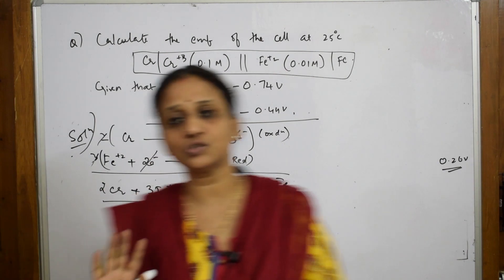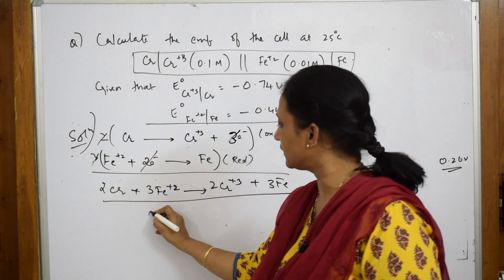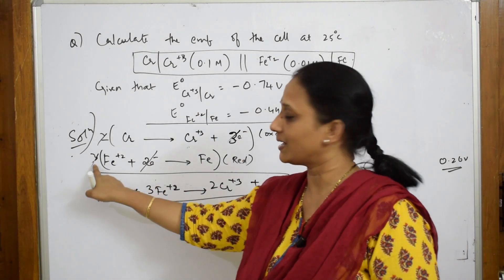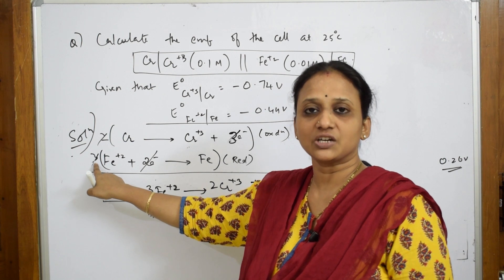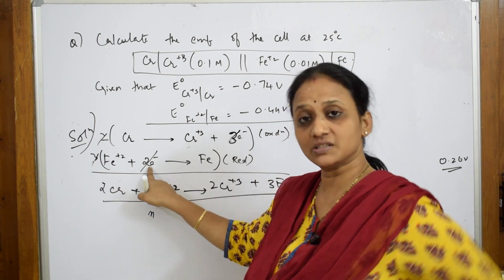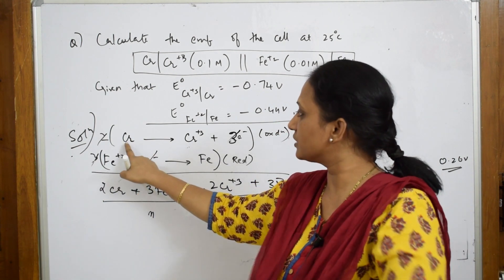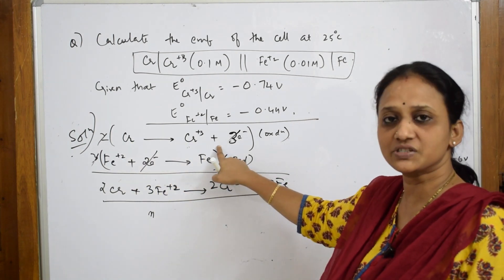How many electrons have transacted totally? 3×2 = 6 here, 2×3 = 6 here, so n = 6. I could only know this after writing a stoichiometric equation.